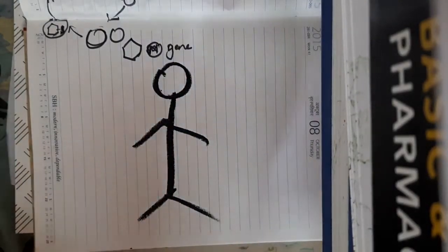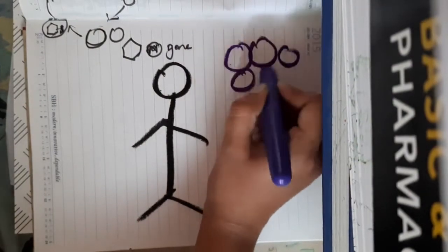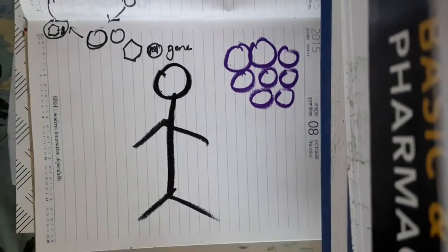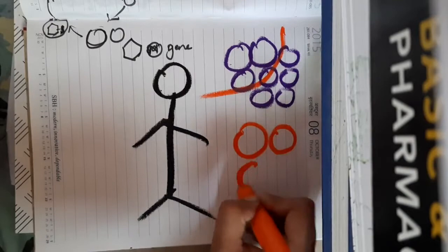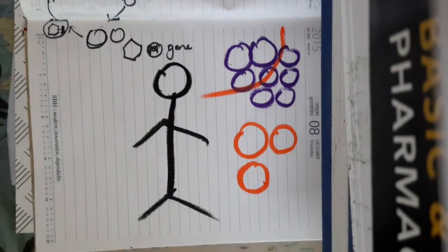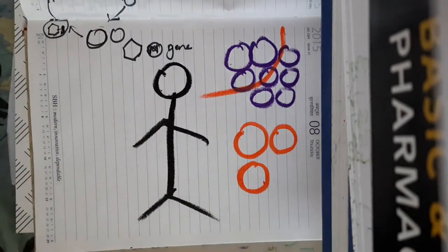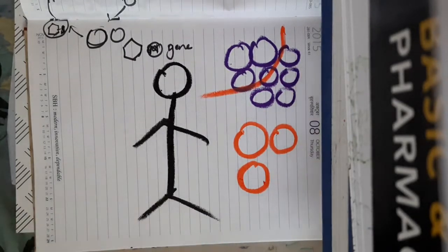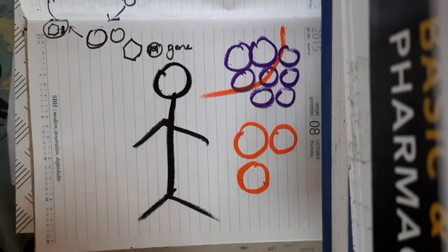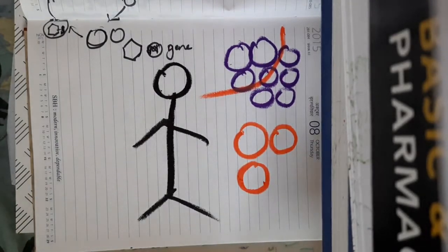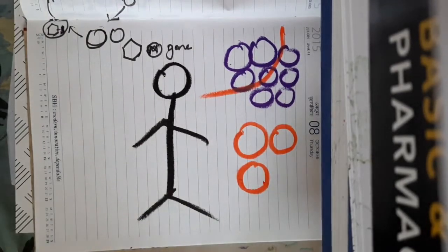I have taken some cells from the patient, and among these cells I will identify the cells with the defective gene. With the help of RDNA technology, I will identify the defective gene and also find the corresponding normal gene. That normal gene is then incorporated into a bacterial or viral plasmid.